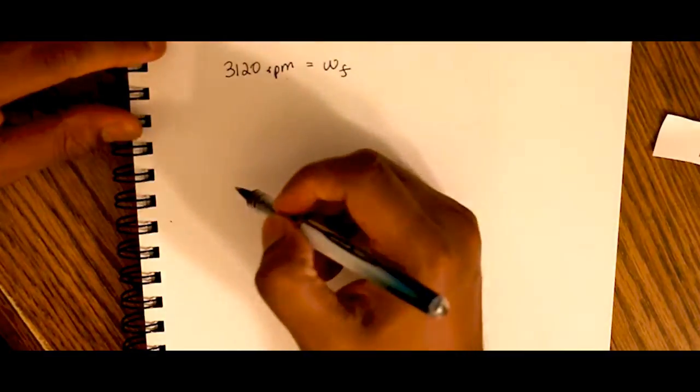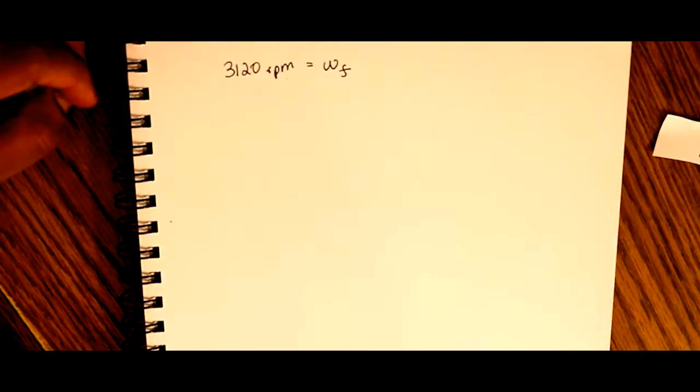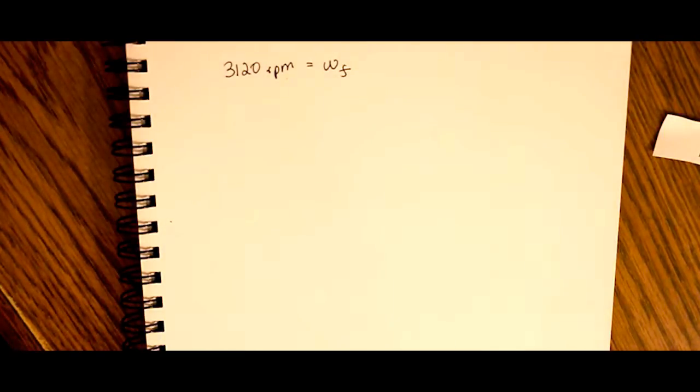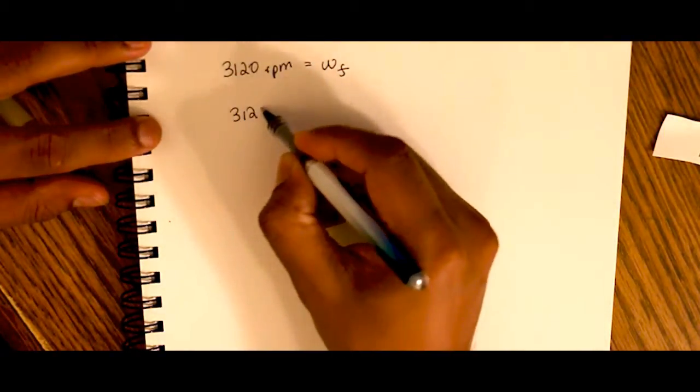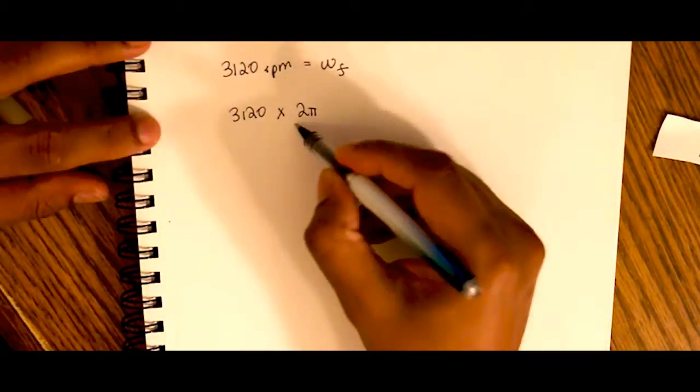So if you want to convert this into radians per second, just remember: 3120 into 2 pi radians over 60.